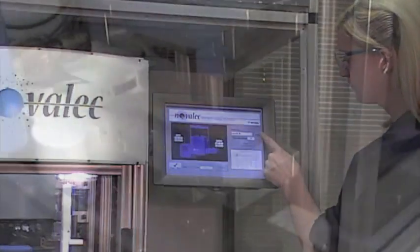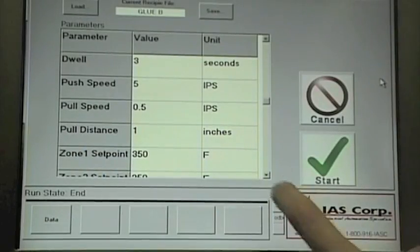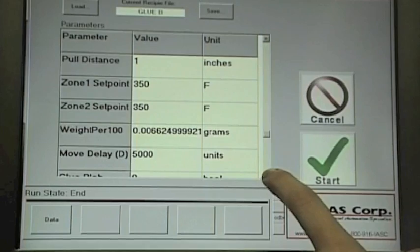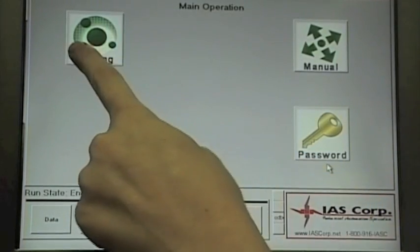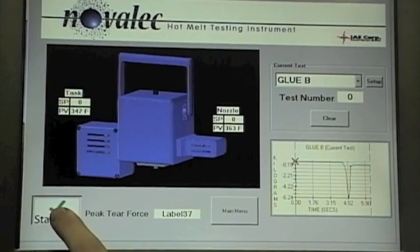Novelec provides different options for setting up the parameters of each test. It can measure the amount of glue being dispensed and achieves more consistent results and higher accuracy using low amounts of compound.